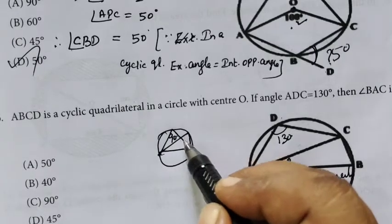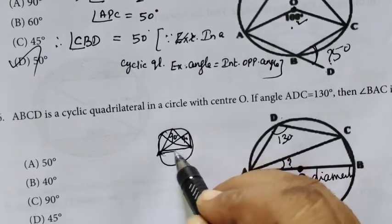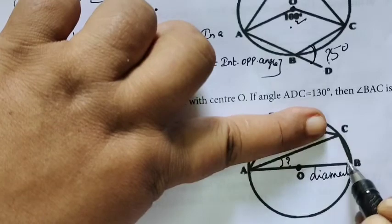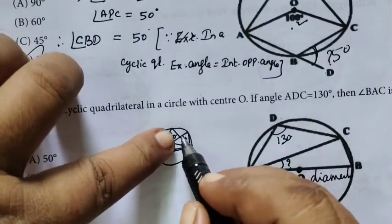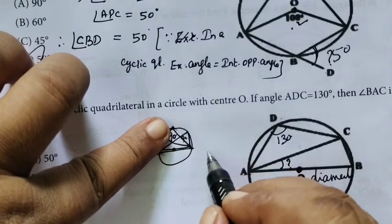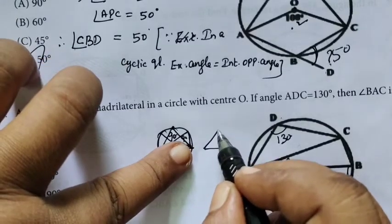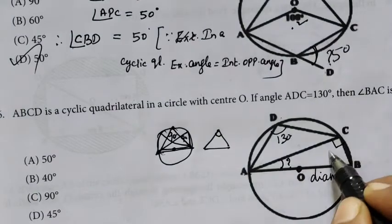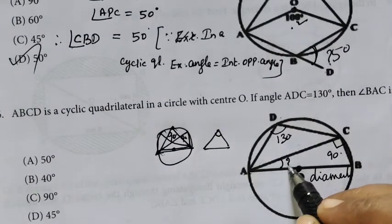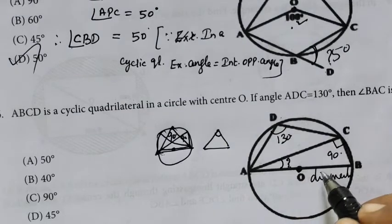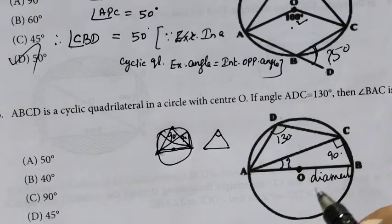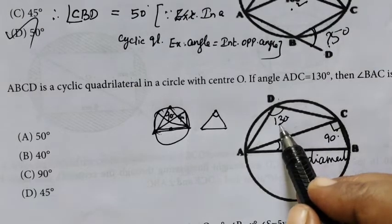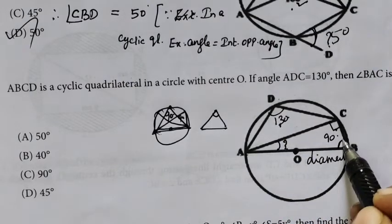A diameter subtends 90 degrees at the circumference. If angle ADC is 130, then the opposite angle ABC equals 180 minus 130, which is 50. Using the property that the diameter makes 90 degrees at the circumference.